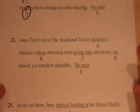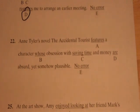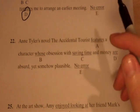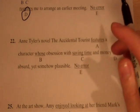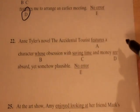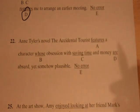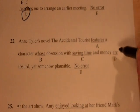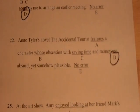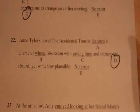Let's go on to number 22. 'In Tyler's novel The Accidental Tourist, features a character whose obsession with saving time and money are absurd, yet somehow plausible.' I just learned about subject-verb agreement, so I know immediately that 'obsession' is the subject and 'are' is the verb — singular subject, plural verb. That's a mistake. If I can name it — subject-verb agreement error — I can go ahead and circle D. And that is what is so nice about knowing the rules.